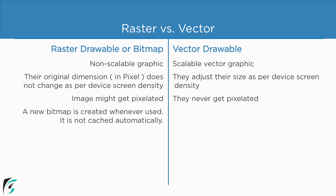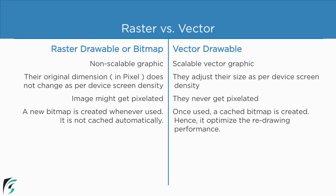Raster drawables are never stored automatically in the cache memory — they are created again and again whenever they are used within the application at runtime. But vector drawables are rendered only once and stored in the cache memory. So the next time we use vectors within our application, they are loaded from the cache memory and are not redrawn on the screen.